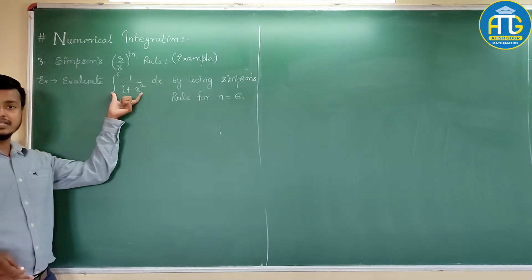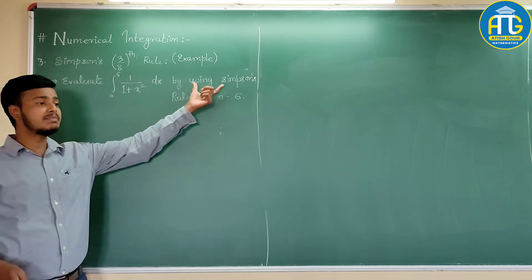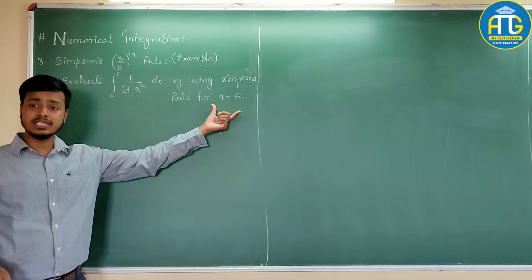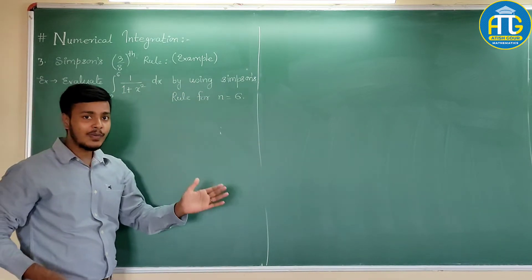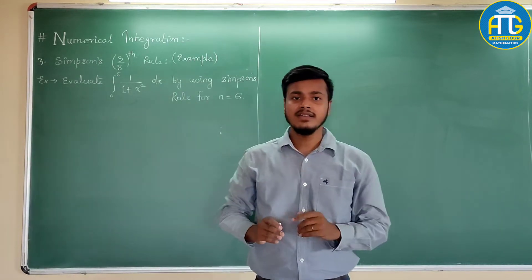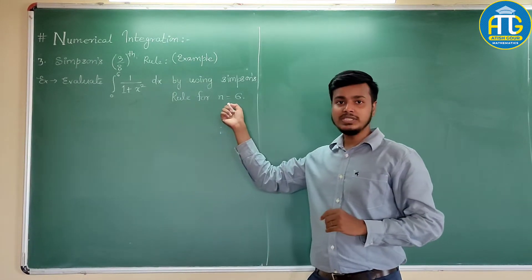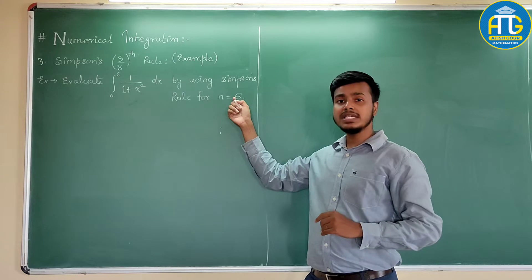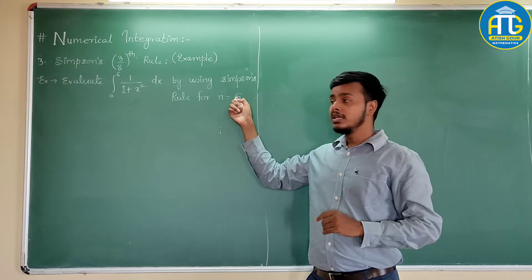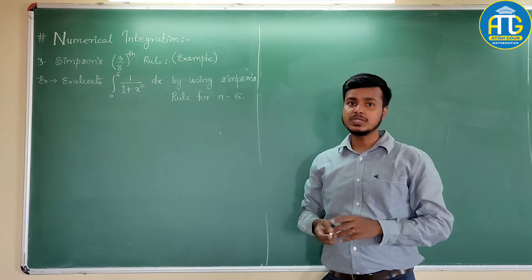See what this example says. This example says evaluate this integral by using Simpson's rule for n equals 6. Now, here comes a dilemma in the mind of the students. Here, n equals 6. 6 is even. 6 is multiple of 3. Then, which one to use?